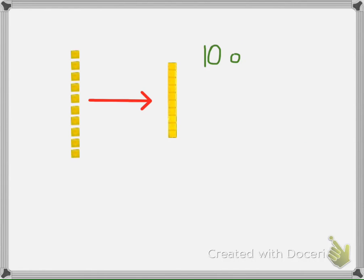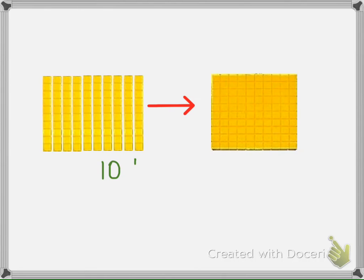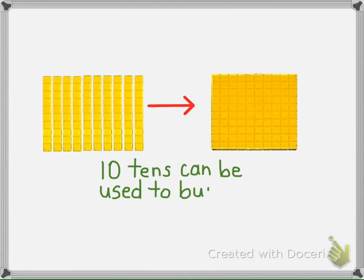Any smaller block can be used to build larger blocks. It takes 10 smaller blocks to build a block of the next larger size. So 10 ones can be put together to build one 10. Continuing this pattern of 10 helps us build larger numbers, too — 10 tens can be put together to build one 100 block.